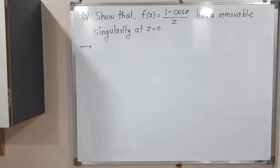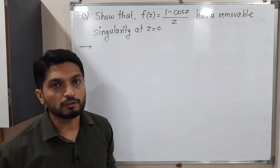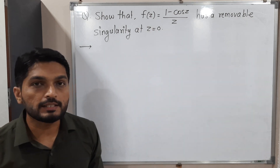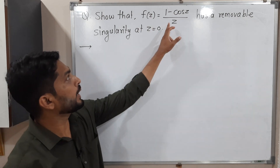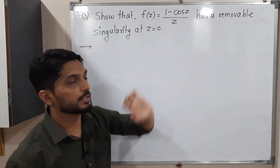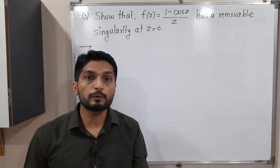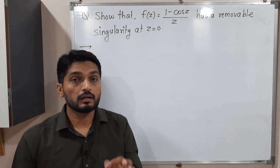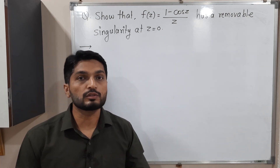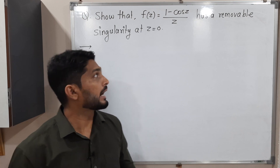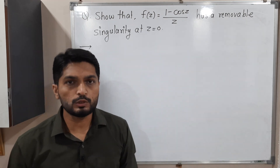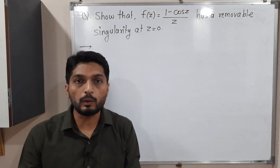Hi everyone. In this video we are going to discuss this example. They have given one complex valued function f(z) = (1 - cos z) / z, and what we have to prove is that it has a removable singularity at z = 0.